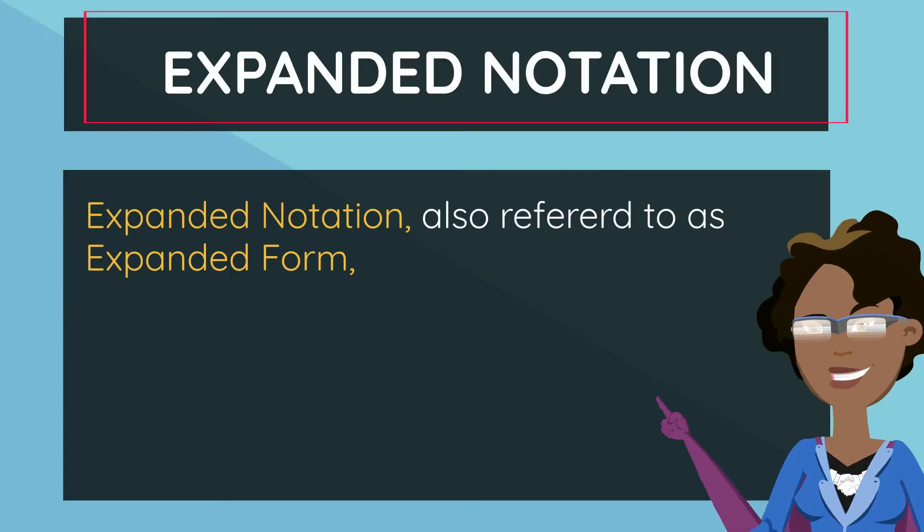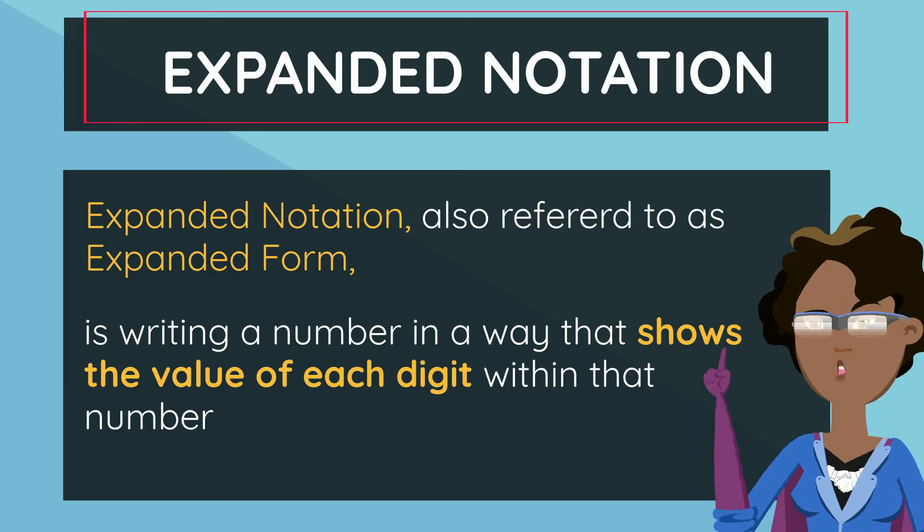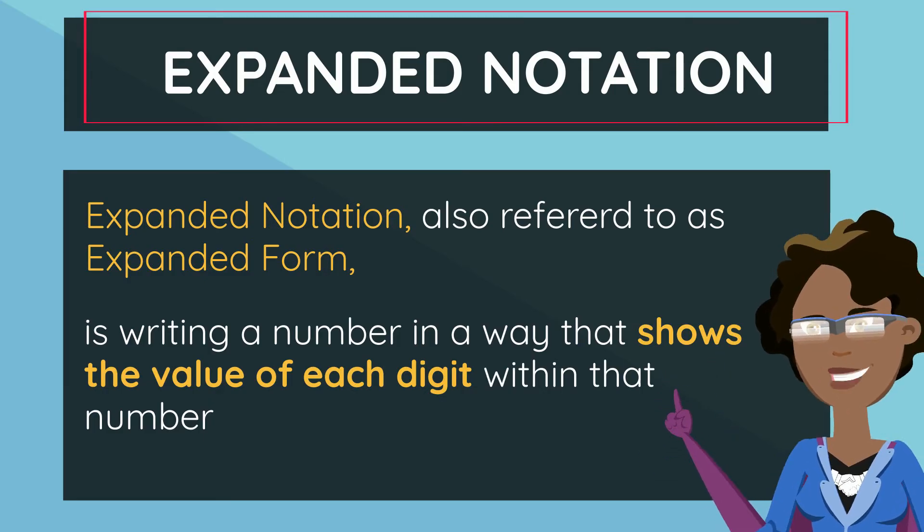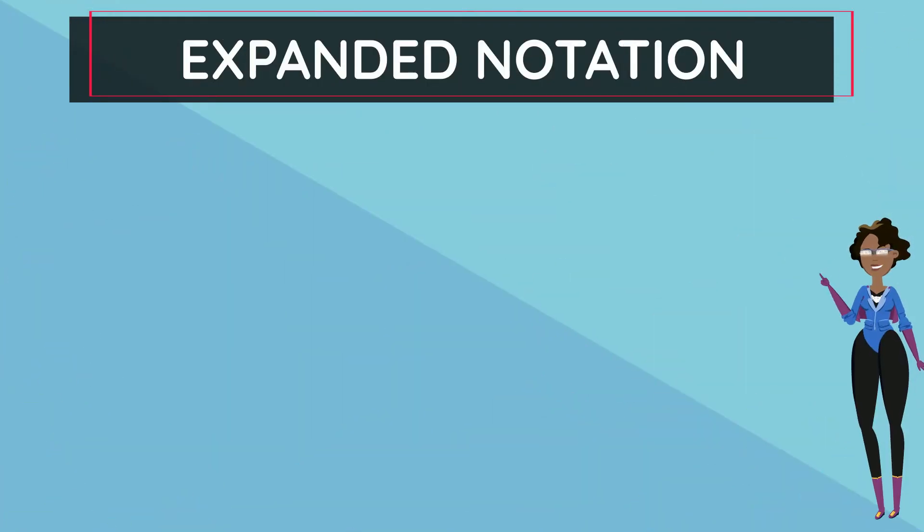Expanded notation, also referred to as expanded form, is writing a number in a way that shows the value of each digit within that number. There are two ways in which you can write expanded form. The first way is by using place value.